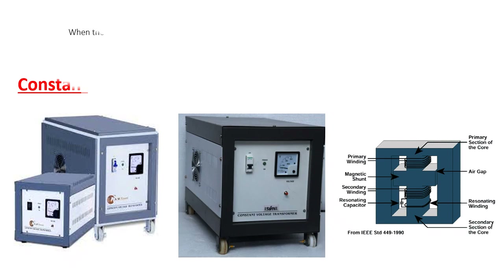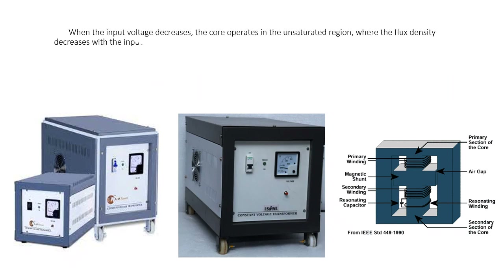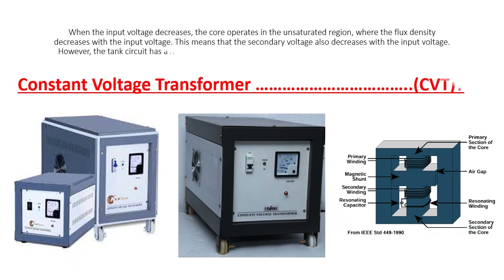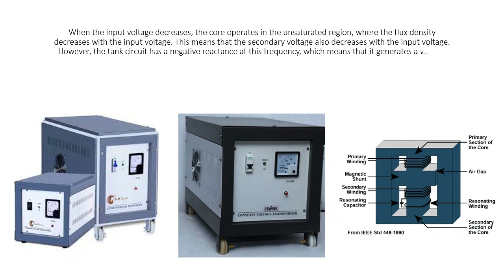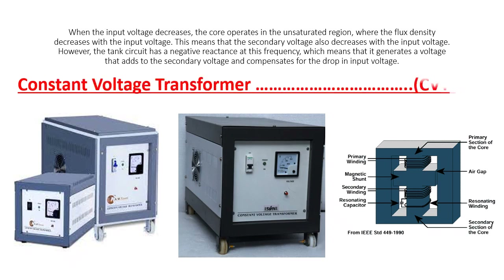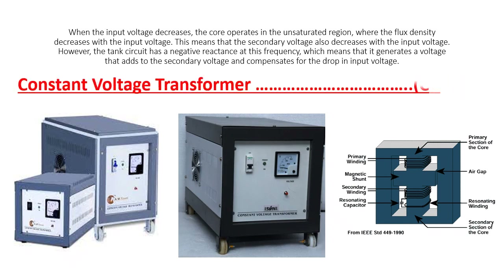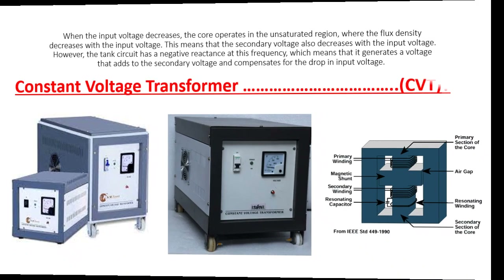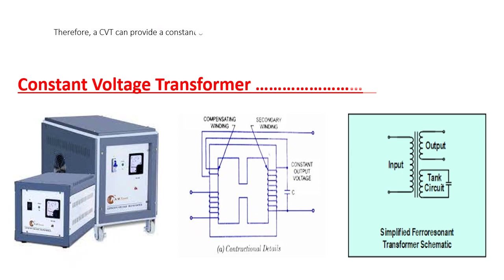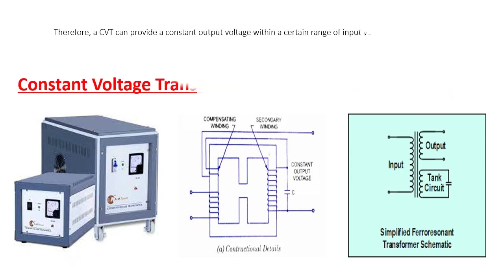When the input voltage decreases, the core operates in the unsaturated region, where the flux density decreases with the input voltage. This means that the secondary voltage also decreases with the input voltage. However, the tank circuit has a negative reactance at this frequency, which means it generates a voltage that adds to the secondary voltage and compensates for the drop in input voltage. Therefore, a CVT can provide a constant output voltage within a certain range of input voltage variations.